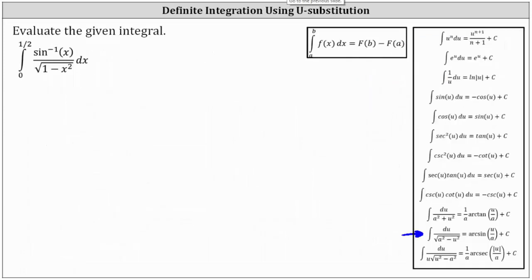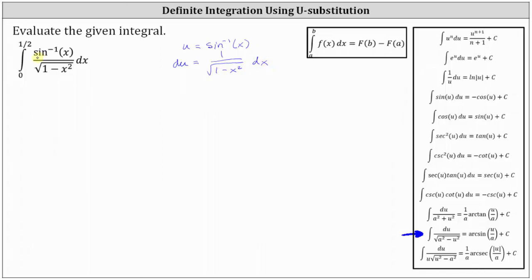So going back to our example, we are going to let u equal the numerator, inverse sine of x. So if u is equal to inverse sine of x, or arc sine of x, then du is equal to the derivative of inverse sine of x times dx, which we now know is equal to one divided by the square root of one minus x squared times dx. So now looking back at the integral, we can substitute u for inverse sine of x, and we also now know we can substitute du for one divided by the square root of the quantity one minus x squared dx.